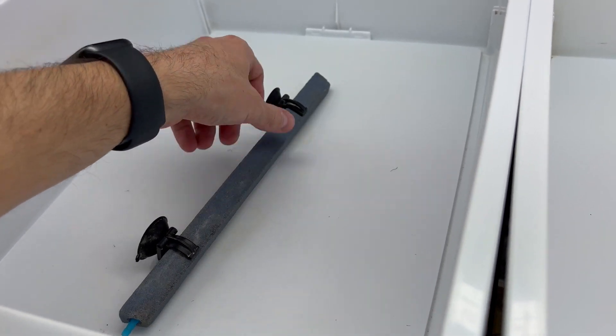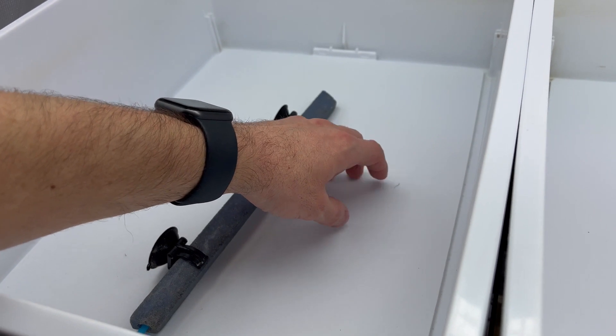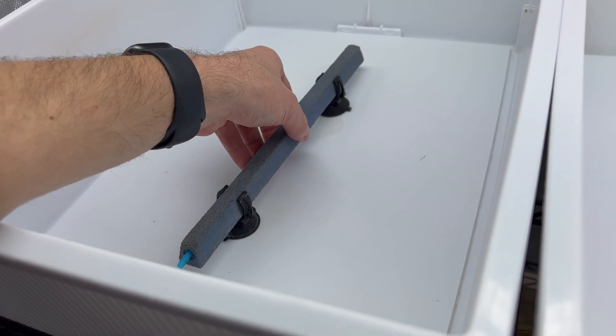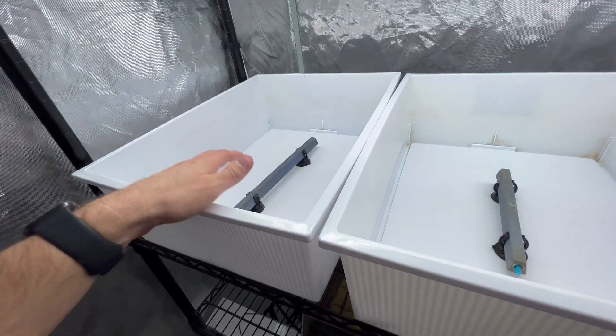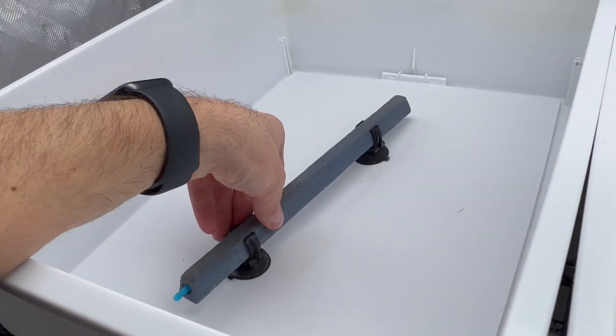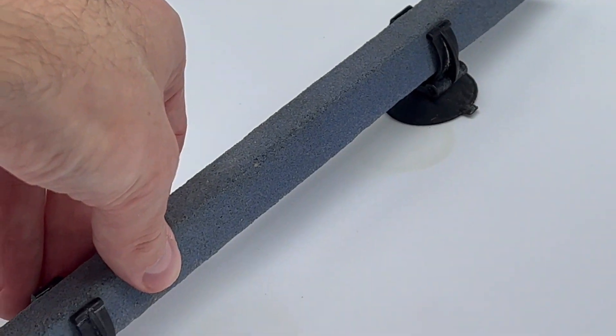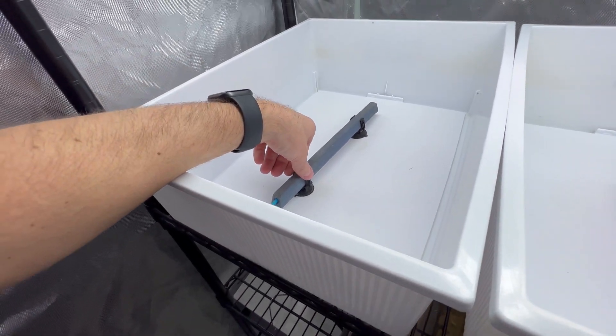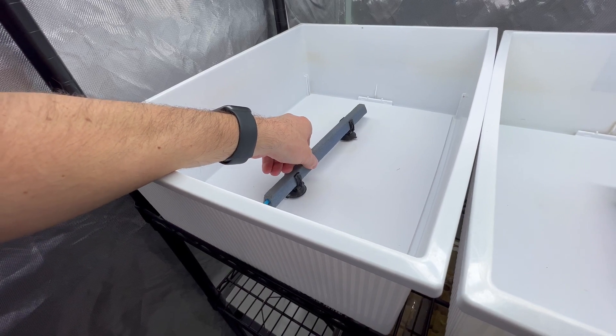But what I do is I put the aerator stones right inside utilizing these little clips. The reason why I do this is because before I would just have the aerator stone kind of just sitting on its stomach on here and it would constantly vibrate all the time. And that's a sound that you don't want. I want the system to be as quiet as possible. So the reality is that's why I thought that this would be beneficial.